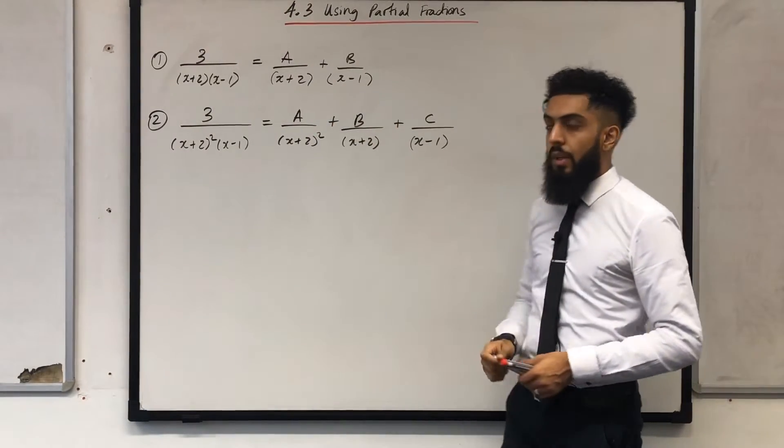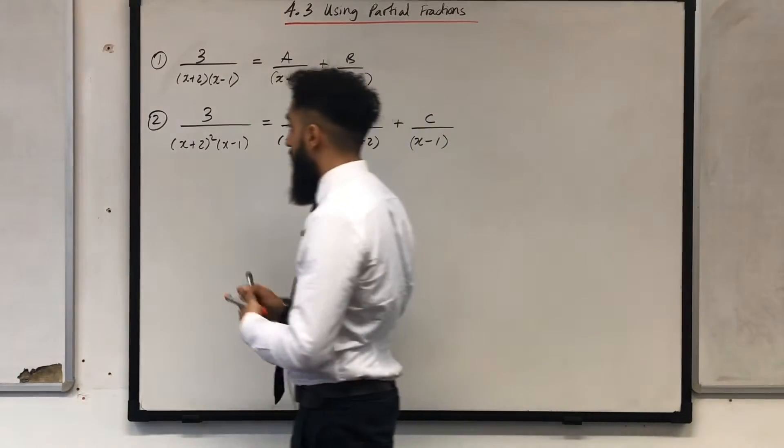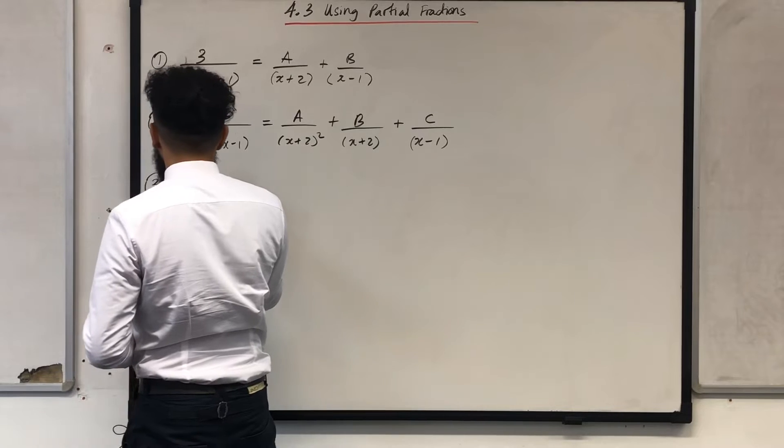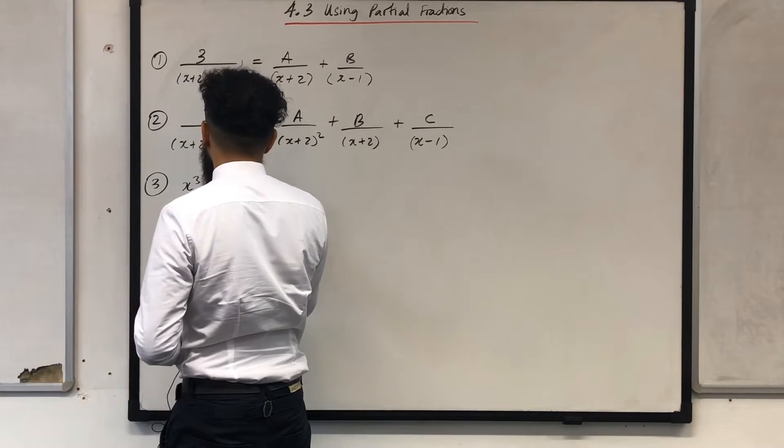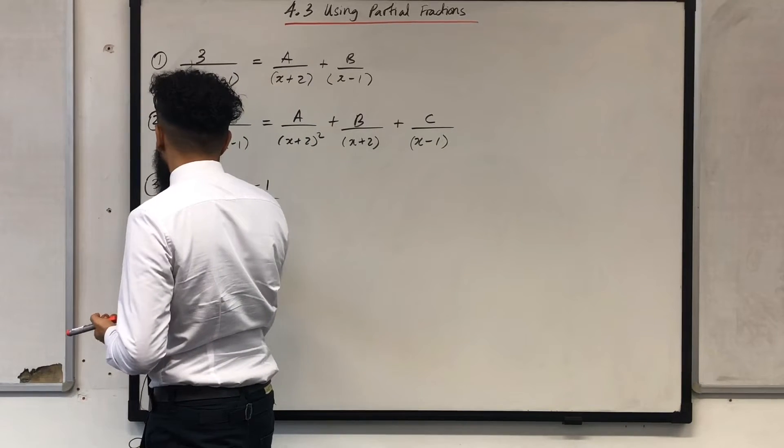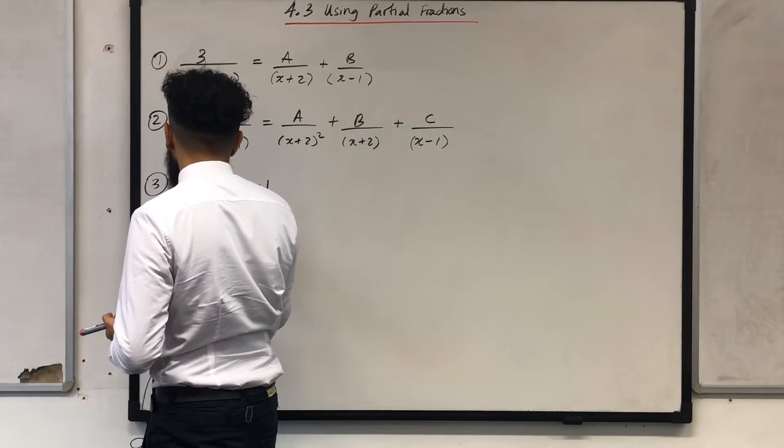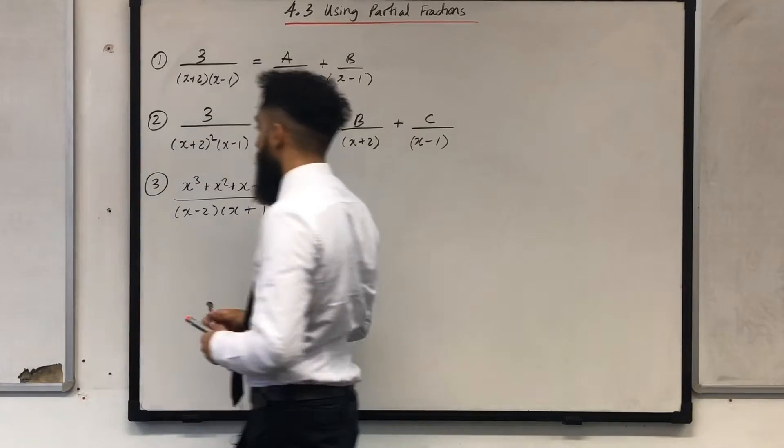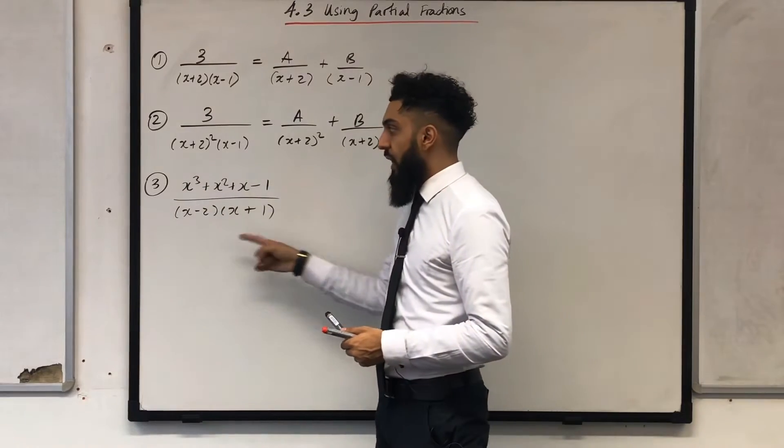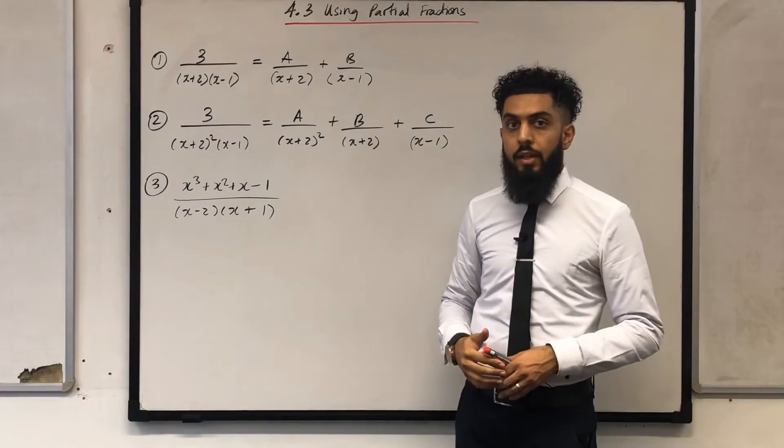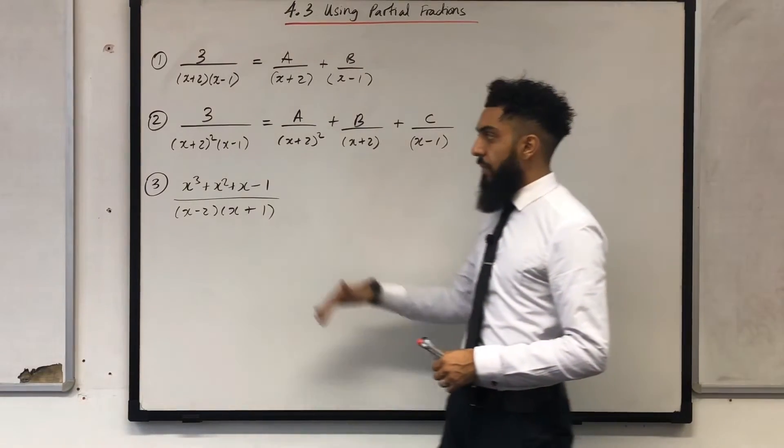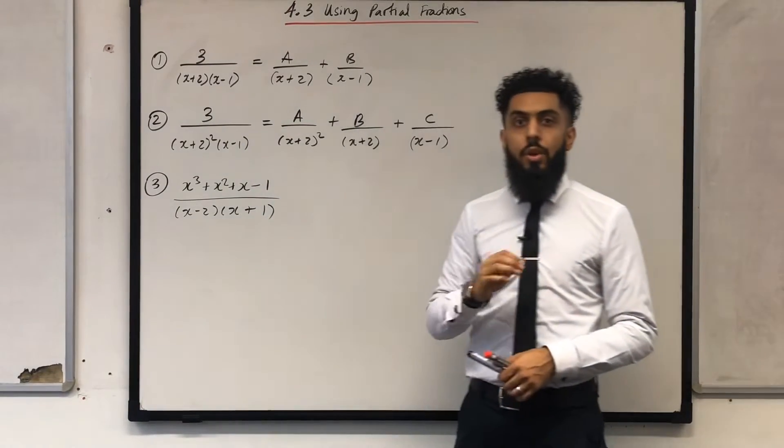The third type that you could get in the exam is of the following form. The fraction looks something like this: x cubed plus x squared plus x minus 1, all over a quadratic, maybe something like x minus 2 x plus 1. First of all what we observe here is that this particular fraction is a top heavy fraction. It is an improper fraction because the top is a cubic and the bottom is a quadratic.